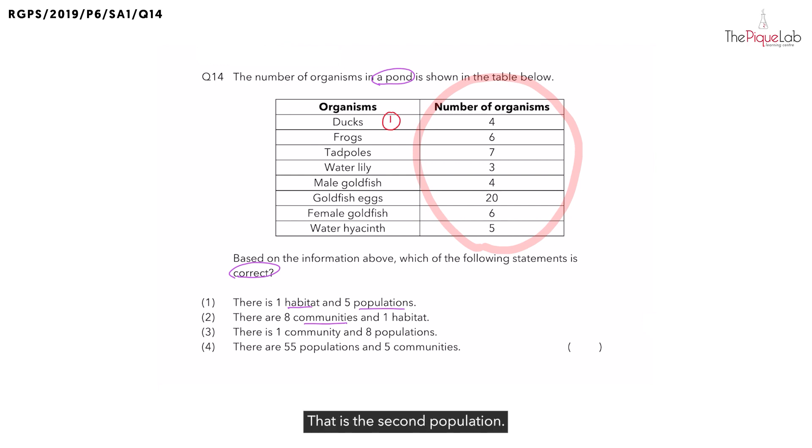Six frogs, that is the second population. Now, what about the seven tadpoles? Can I call that the third population of animals? No. Tadpoles and frogs are the same species. So, I'm going to use the same number two to indicate that this is the second population.